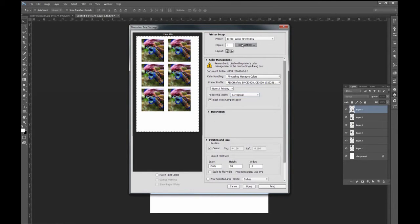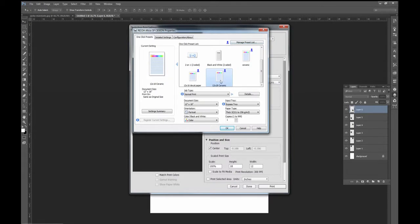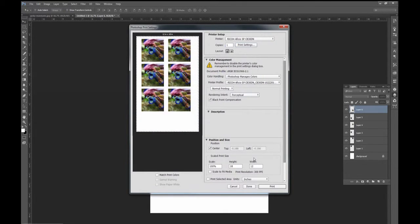So let's go ahead. I'm going to change my settings here. Make sure it's coming out the bypass tray and make sure it's on the right settings. And we'll print.